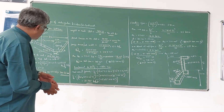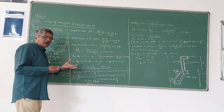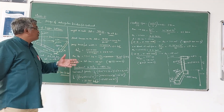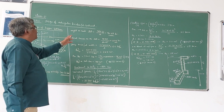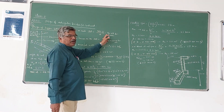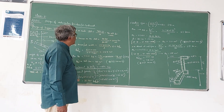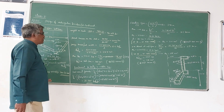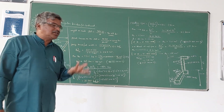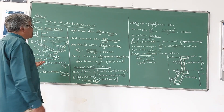Therefore, on each slab the load is 360.33 divided by 4, which gives 90.08 kN per slab. Now we also have to calculate the direct tension on the slab. The direct tension is related to this weight.